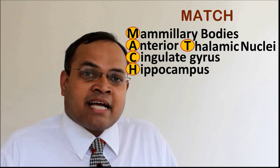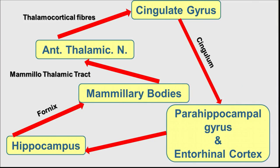Coming to the connections between these parts: from the hippocampus, the fornix leads to the Mammillary Bodies. The Mammillo-Thalamic Tract connects the Mammillary Bodies to the Anterior Thalamic Nuclei. From the Anterior Thalamic Nuclei, there are many cortical projections to various parts of the neocortex, and some of these reach the Cingulate Gyrus.